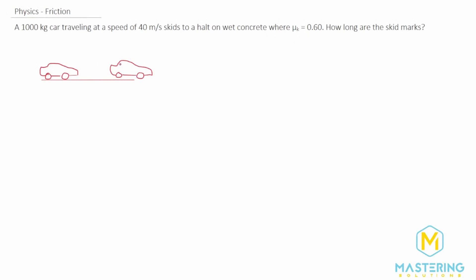First, I drew the picture here so we can see what's happening, because the picture really does help to better conceptualize the problem. We have an initial velocity of 40 meters per second, and since it's skidding to a halt, the final velocity will be 0 meters per second. X-initial is 0 meters, x-final is what we're looking for, the mass is 1,000 kilograms, and the coefficient of kinetic friction mu sub k is 0.6.